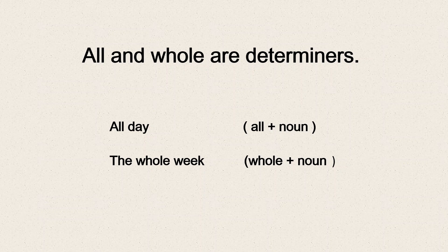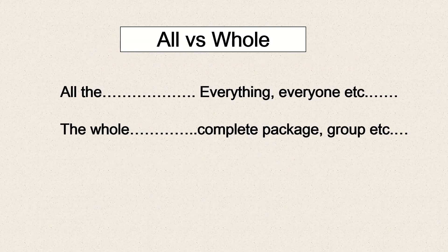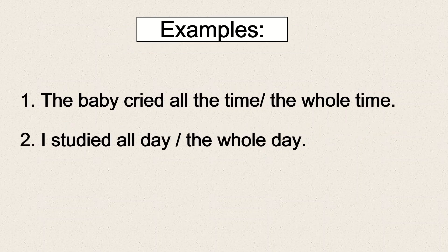'All' and 'whole' are determiners — for example, 'all day' and 'the whole week.' So the pattern is: all + noun and whole + noun. 'All' means everything or everyone, while 'whole' means a complete package or group. For example: the baby cries all the time, or the baby cried the whole time.